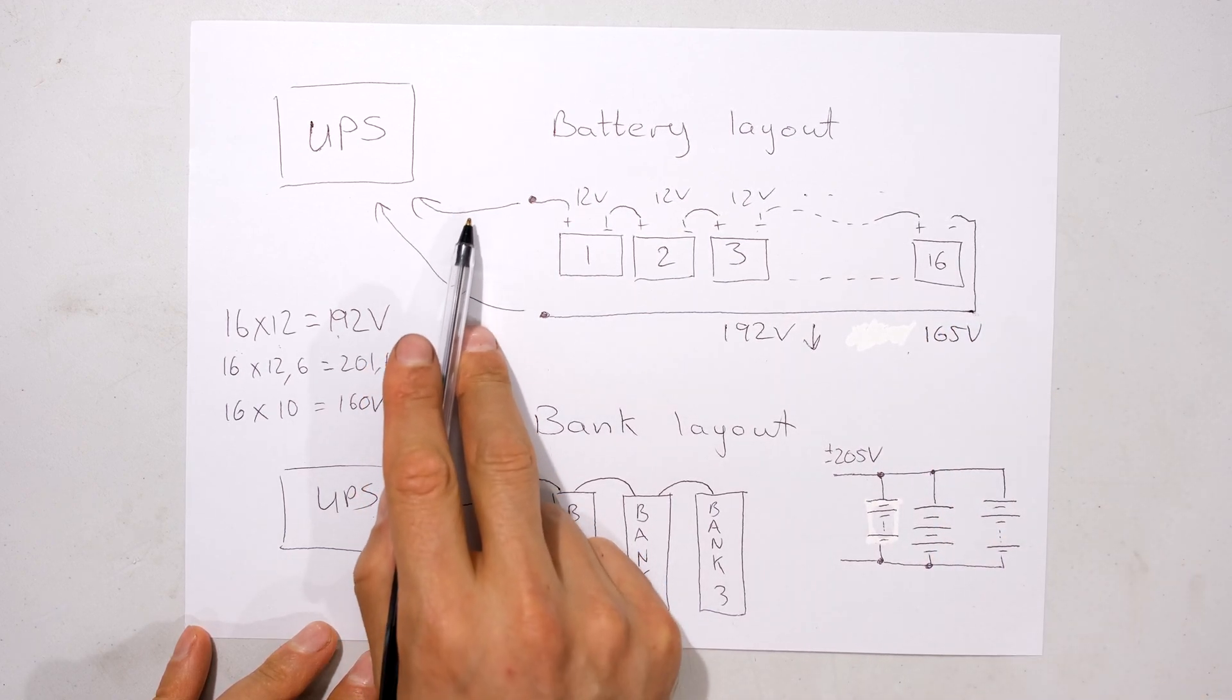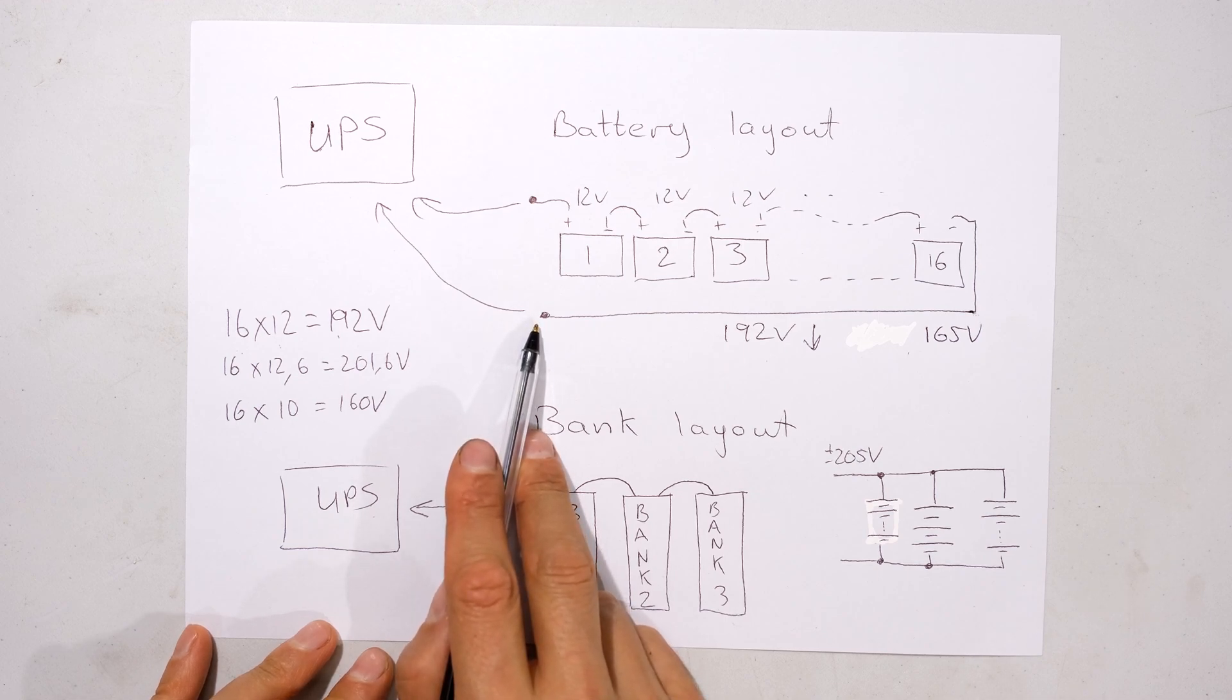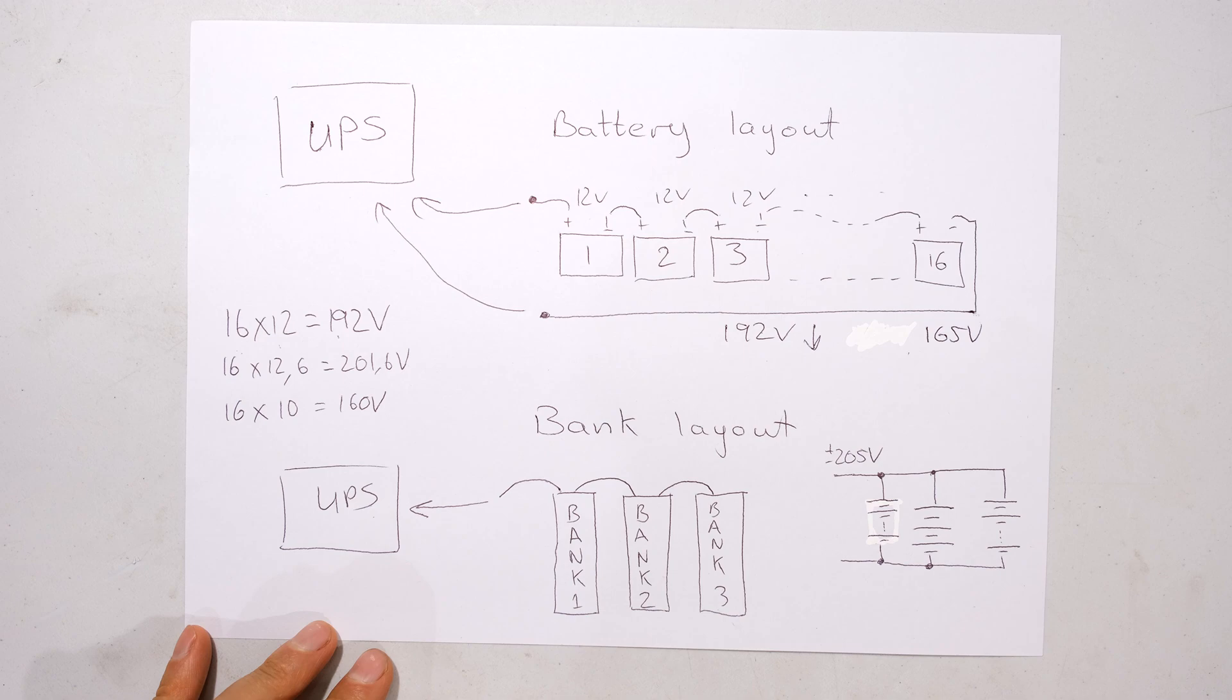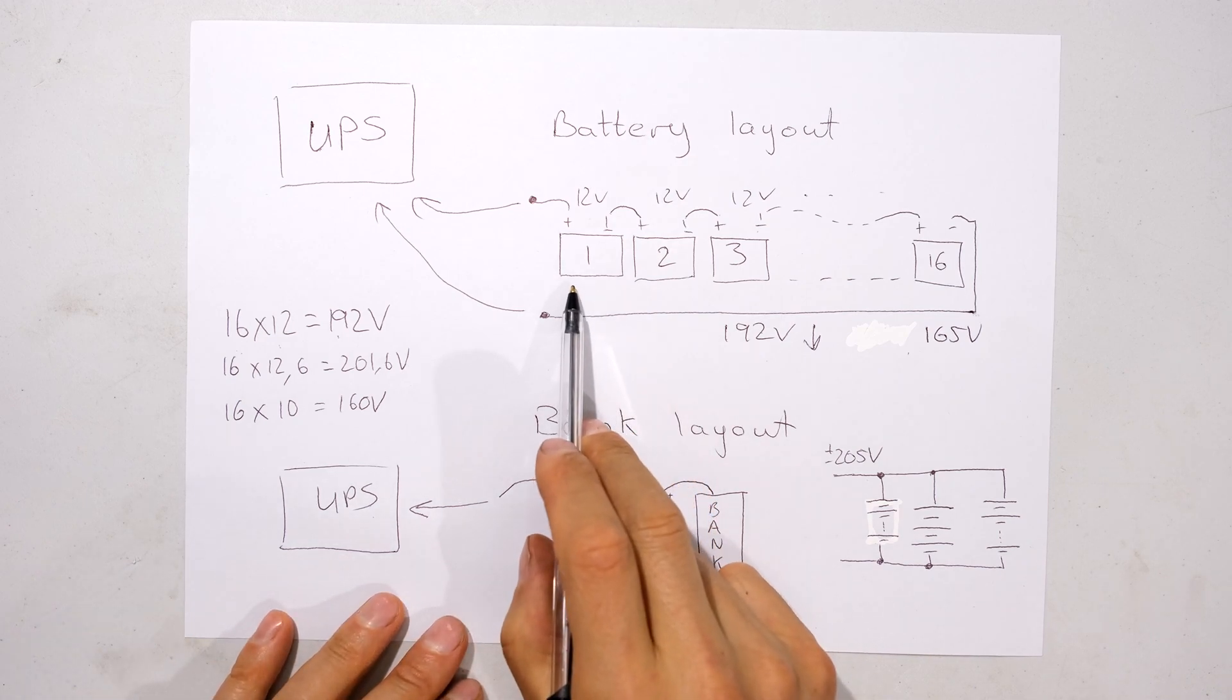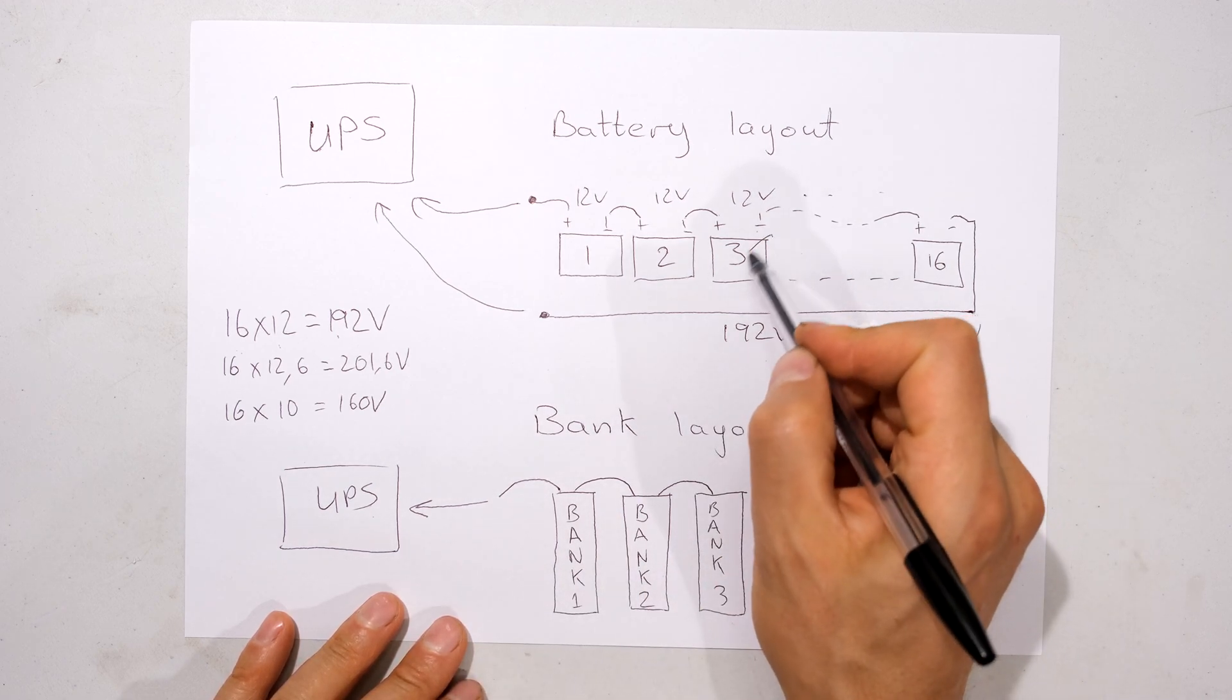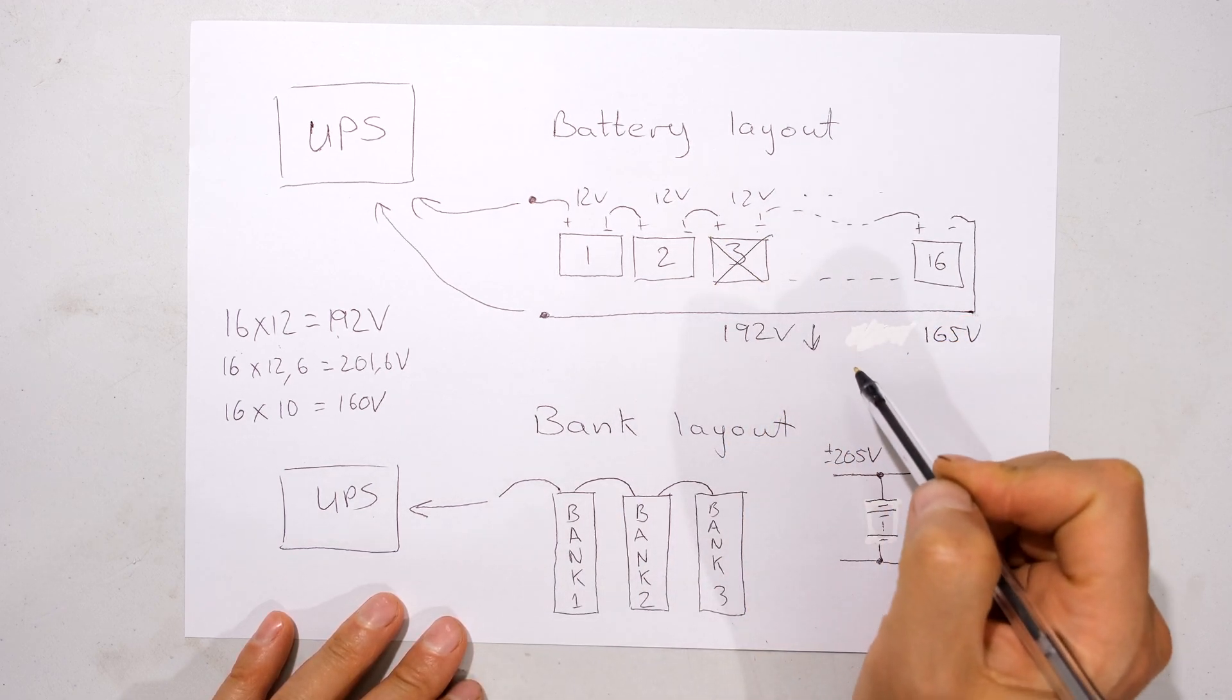The UPS is actually measuring this voltage and I'm not sure the exact amount but let's say at 165 volts. At 165 volts the UPS knows that the battery bank is now discharged and it will have to disconnect it, otherwise it'll run the risk of destroying those batteries. Here are the problems: the first one is not all lead acid batteries last for the same amount of time.